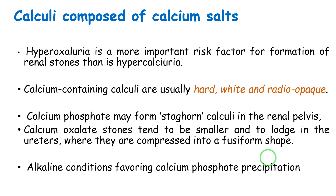Calcium-containing stones are either calcium phosphate or calcium oxalate. Calcium phosphate forms staghorn calculi located in the renal pelvis, while calcium oxalate stones are smaller and white, typically found in the ureter. Both are generally radio-opaque and can be seen on a plain X-ray (KUB). They are usually hard and white. The alkaline pH favors the formation of calcium phosphate stones.